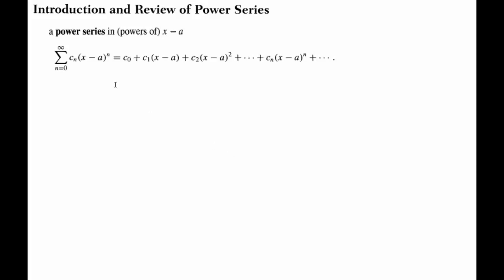As you see here, n equals zero to infinity is an infinite series where C_n is the coefficient of the power series, and your powers emanate from the term (x minus a) to the power n. If a equals zero, we end up with a power series in x: sum of C_n x^n equals C_0 plus C_1 x, and so on.